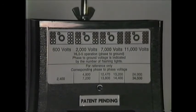Adapters are available to allow the HLS 5 to be used on 15 through 35 KV underground systems. These adapters allow the HLS 5 to be placed directly on the underground bushings.